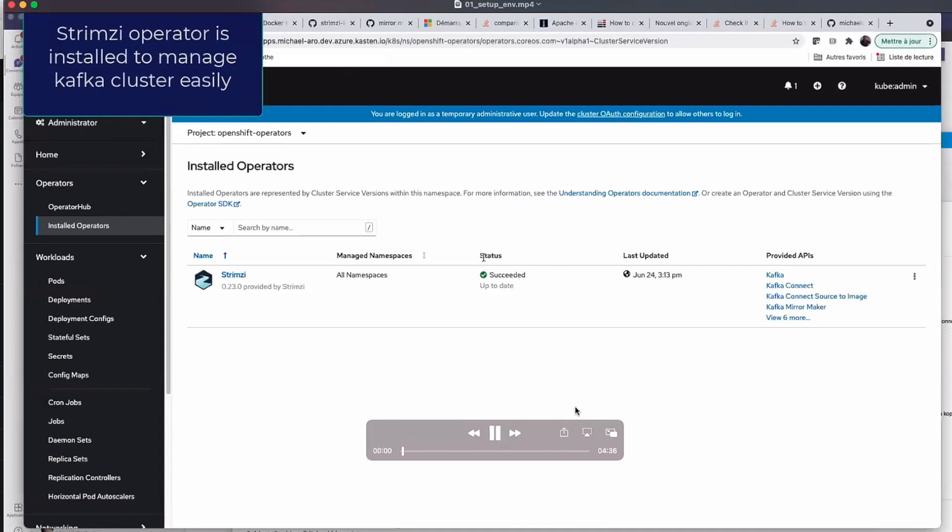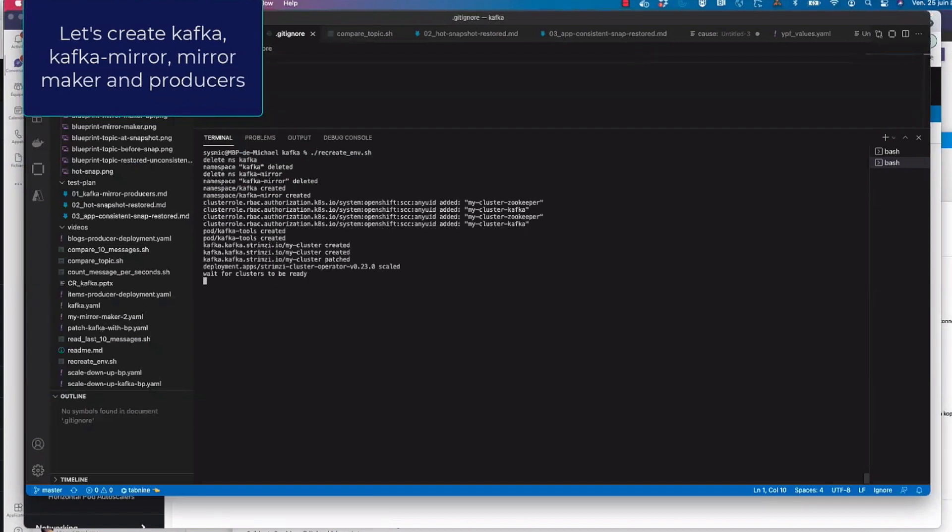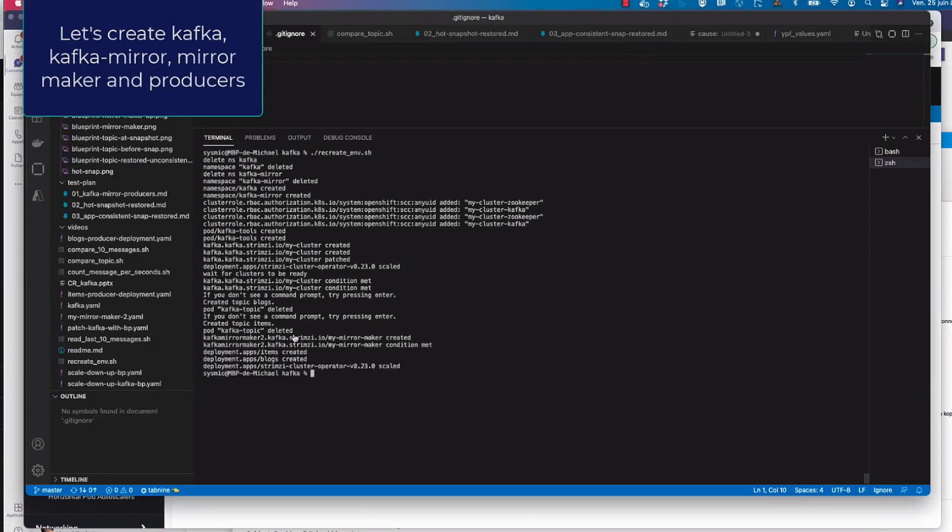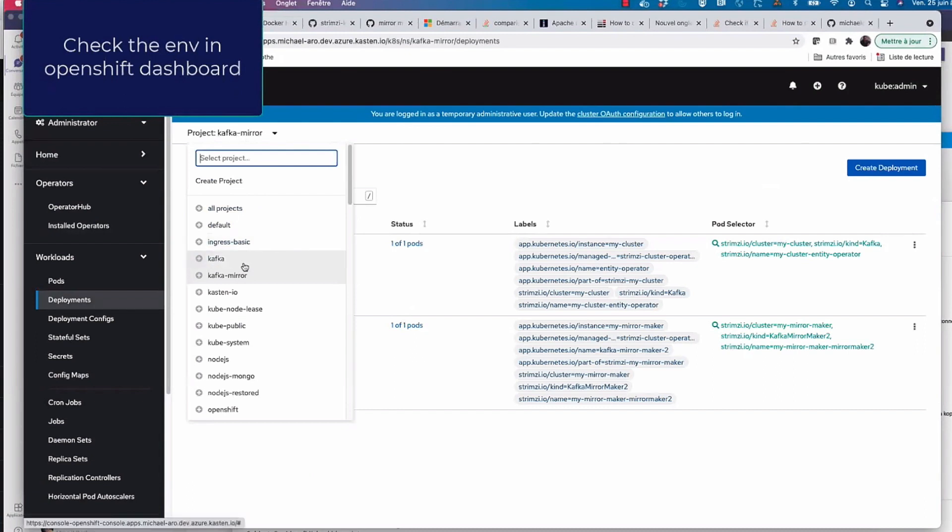So we're using Strimzi, the operator, which is helping us to manage our environment. So here I'm executing the script which is going to build my two clusters, my two namespaces. So I have one namespace which is called Kafka and the other one which is Kafka mirror. And we're going to install everything, the Kafka cluster, the producers and the mirror maker which is making the mirroring between the two clusters. So that's it. Now I have Kafka mirror and I also have Kafka.